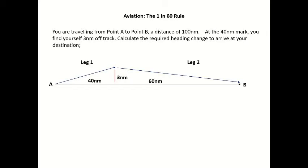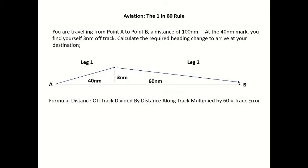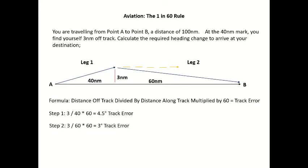Once again, two legs — leg 1 and leg 2. Formula: distance off track divided by distance along track multiplied by 60 equals track error. Step 1: to bring ourselves back parallel to track — 3 nautical miles off track divided by 40 nautical miles along track times 60 gives us 4.5 degrees track error. Step 2: 3 nautical miles off track divided by 60 nautical miles along track times 60 gives us 3 degrees. So once we're parallel we need to turn an additional 3 degrees to reach point B. Total: 4.5 plus 3 equals 7.5 degrees heading change required.